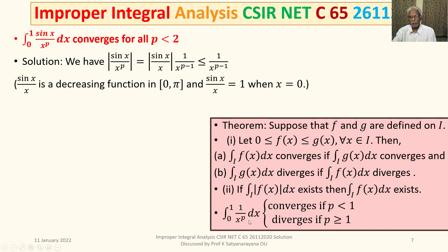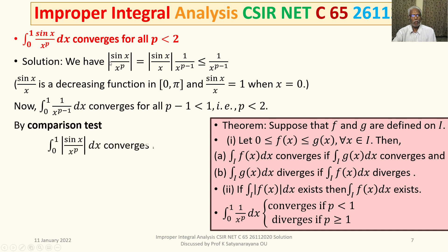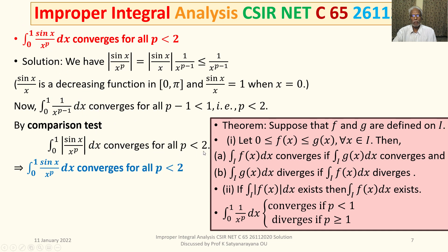Therefore, since ∫₀¹ 1/x^{p−1} dx converges for p < 2, by the comparison test ∫₀¹ |sin(x)/xᵖ| dx converges for all p < 2. To remove the absolute value, we use the result that if ∫|f(x)|dx converges then ∫f(x)dx also converges. Therefore ∫₀¹ sin(x)/xᵖ dx converges for all p < 2. That proves the first part.